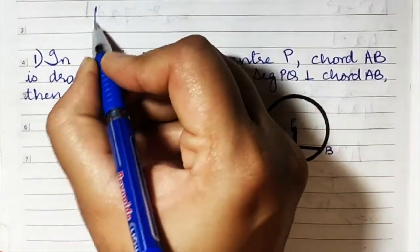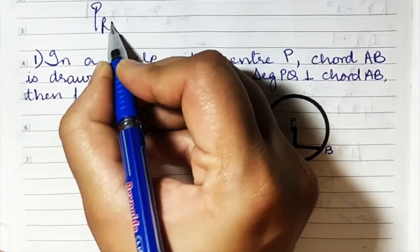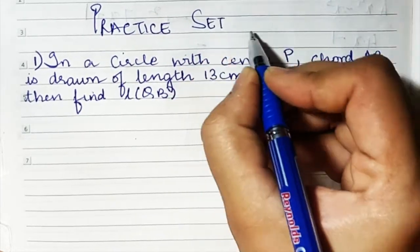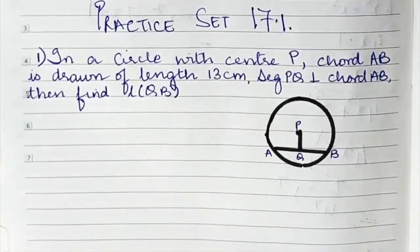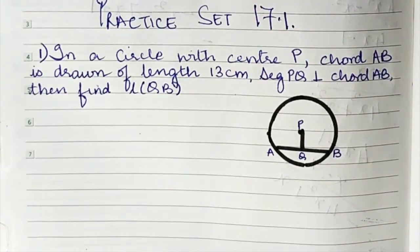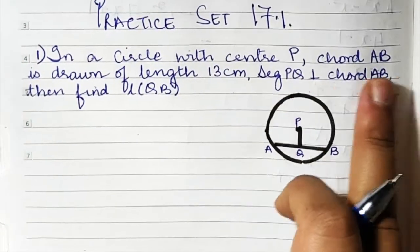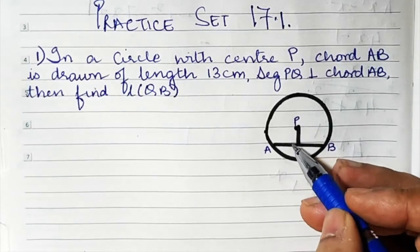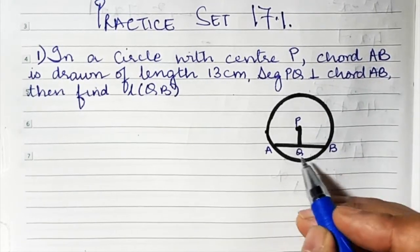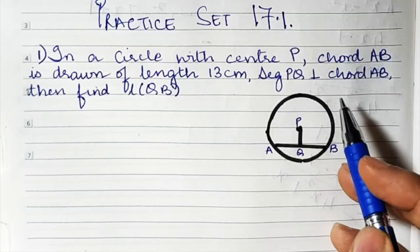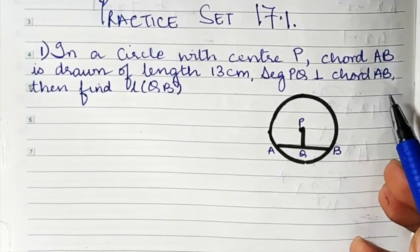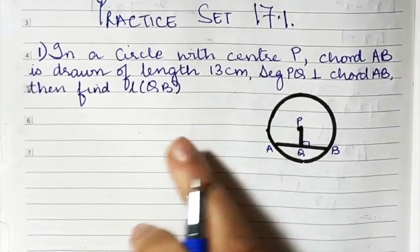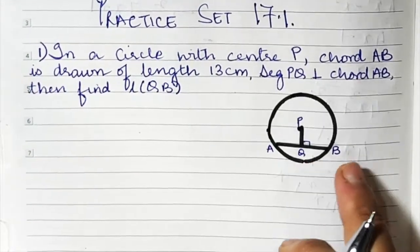Let's begin with practice set 17.1. The first sum: in a circle with center P, chord AB is drawn and the length of AB is 13 centimeters. Segment PQ is perpendicular to chord AB. Find QB.